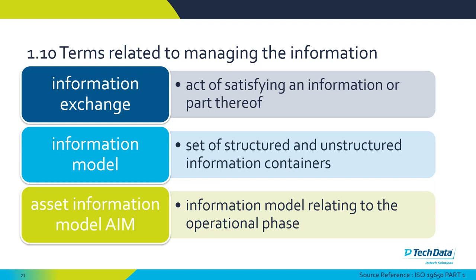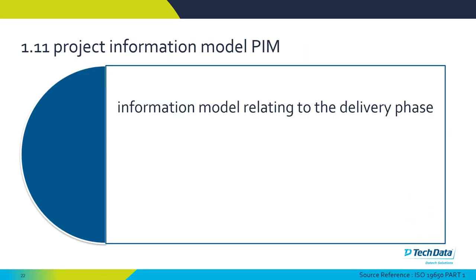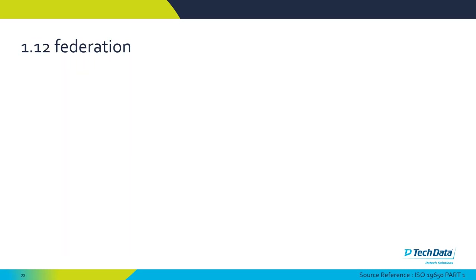Other terms you'll come across in the ISO documents include information exchange, information model, asset information model, and project information model. The project information model is an information model relating to the delivery phase — the design and construction phase. The PIM can also be used to express the intent of the design or even a 3D representation of the building or asset to be constructed.